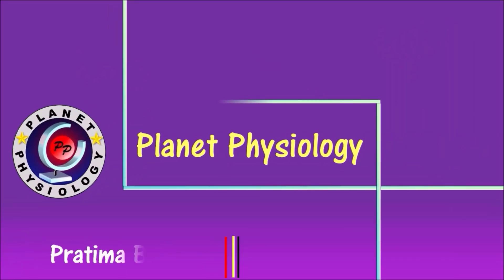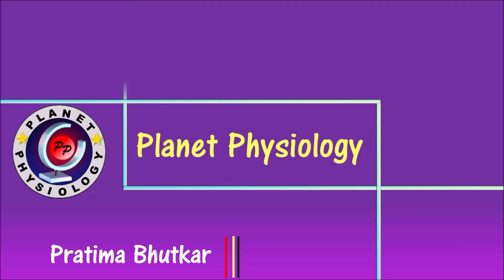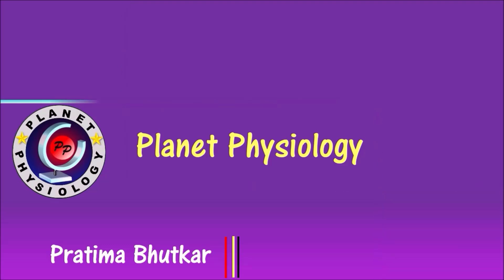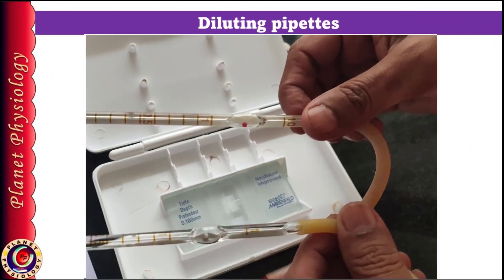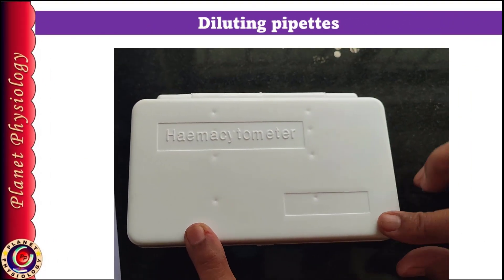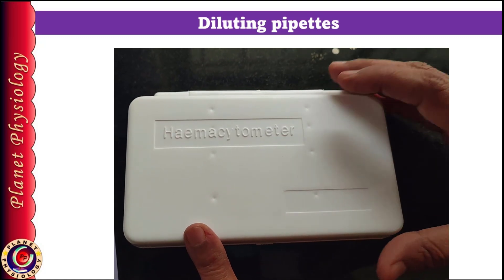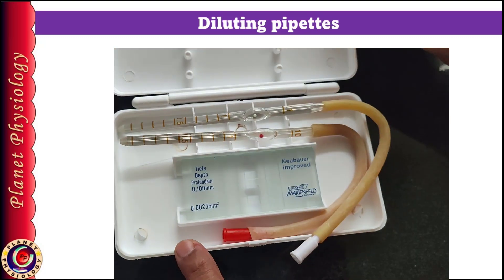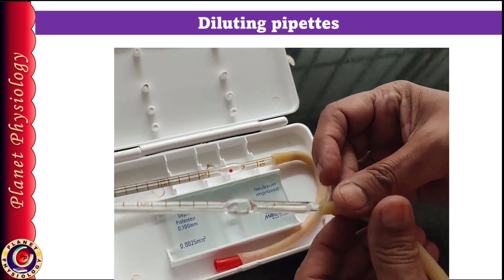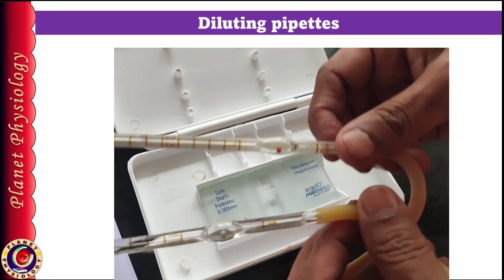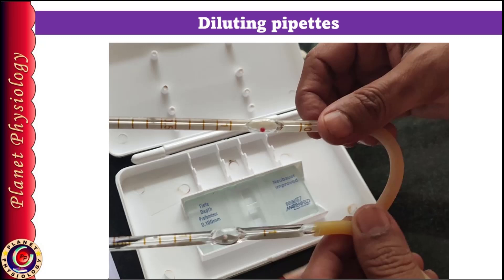Hello everyone, this is Prathima and welcome back to Planet Physiology. In part 1 of Hemocytometry, we studied the construction and principle of the Neubauer chamber, and today we shall delve into the diluting pipettes. We have seen that the hemocytometer contains two specialized pipettes: the WBC pipette and the RBC pipette, along with the Neubauer chamber. Let's start with the purpose of the pipettes in hemocytometry.